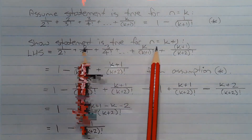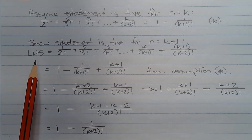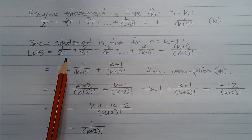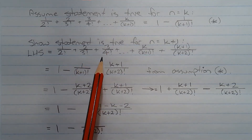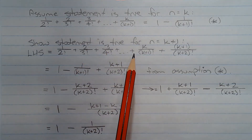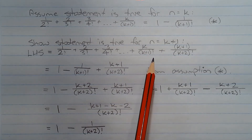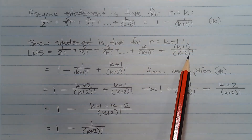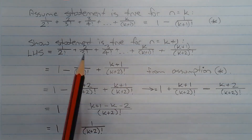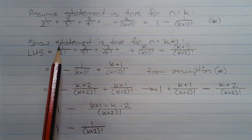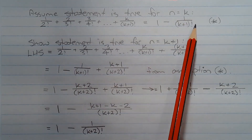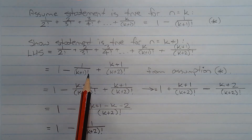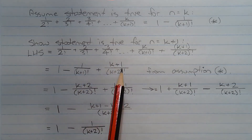Next we show the statement is true for n equals k plus 1. From the left hand side of the assumption, that equals 1 over 2 factorial plus 2 over 3 factorial plus 3 over 4 factorial plus dot dot dot plus k over k plus 1 factorial plus the next term along, which is k plus 1 over k plus 2 factorial. From the assumption we can replace these terms with the right hand side of the assumption, so that equals 1 minus 1 over k plus 1 factorial plus k plus 1 over k plus 2 factorial.